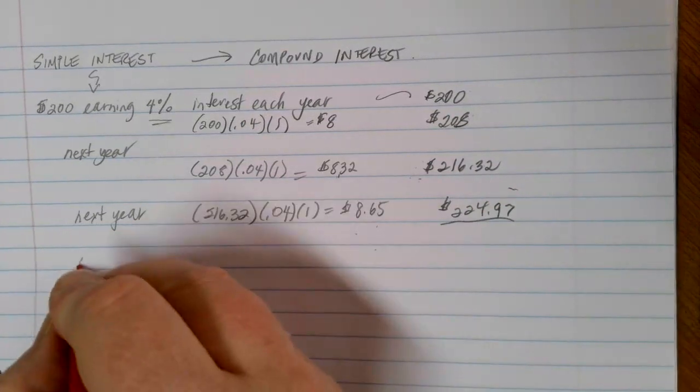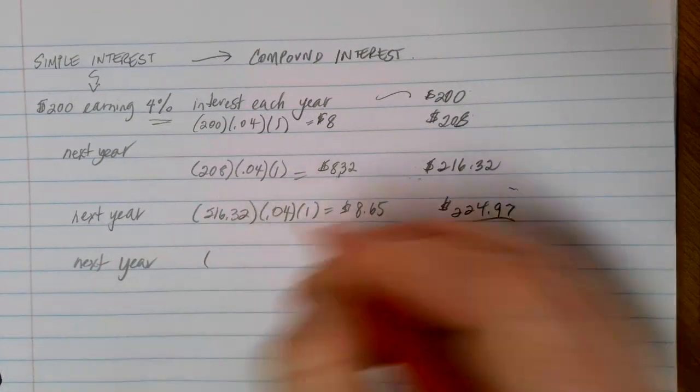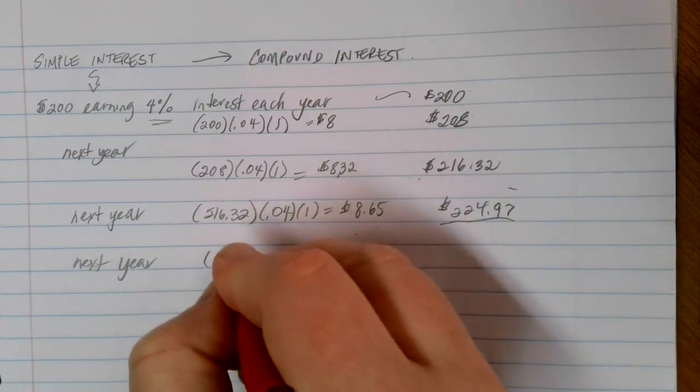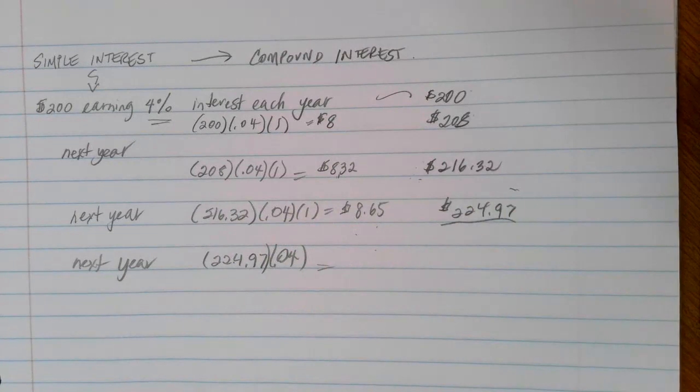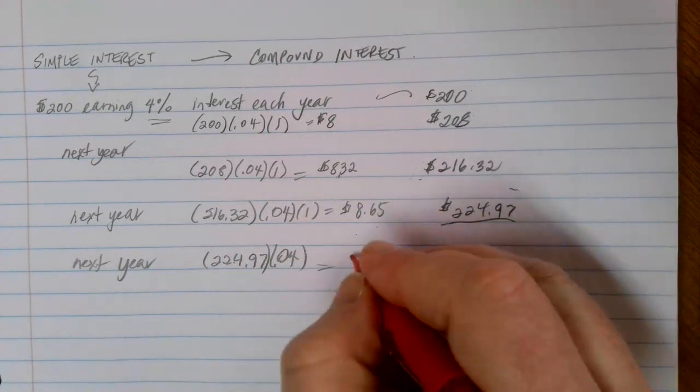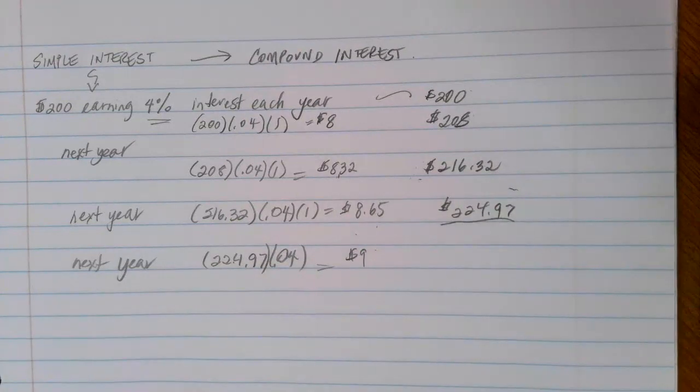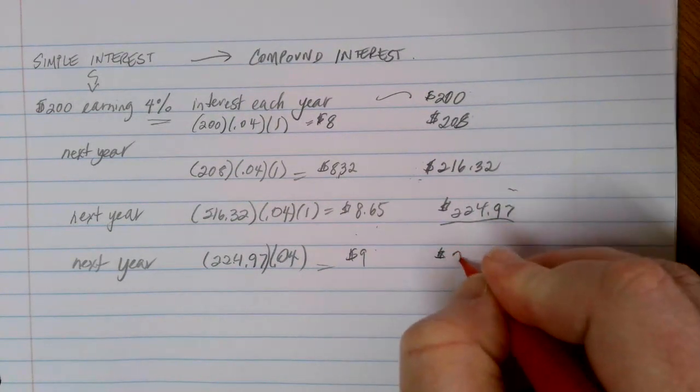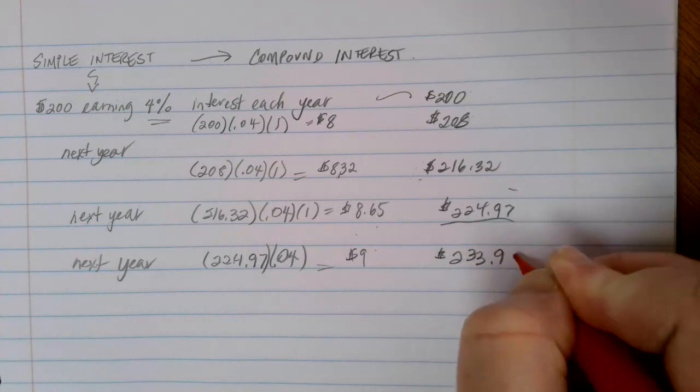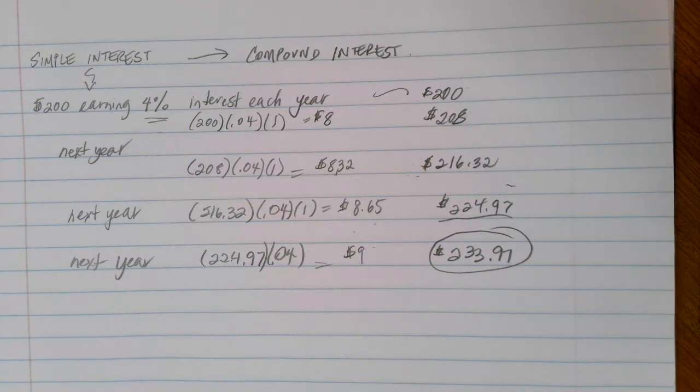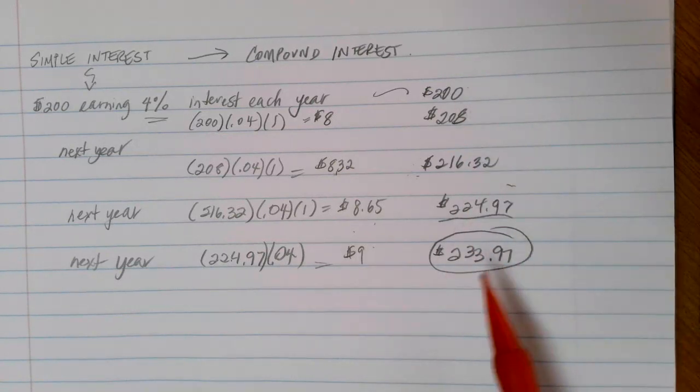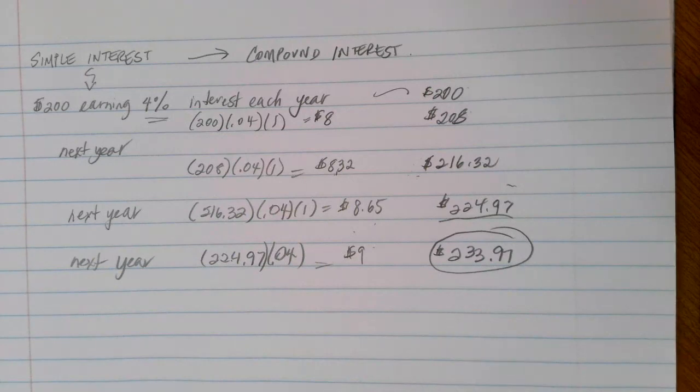If we wanted to compare that to the example in the last one, we'd be able to do one more year. Same idea, only this time I'm taking this higher value, the $224.97. Finding 4% of that gives me an additional $9. And I can add that $9 into my $224. Now, in this case, I have $233.97, whereas in the last example, just using simple interest, I only had $232. So this idea of reinvesting really ends up giving you this exponential growth as we're going through.